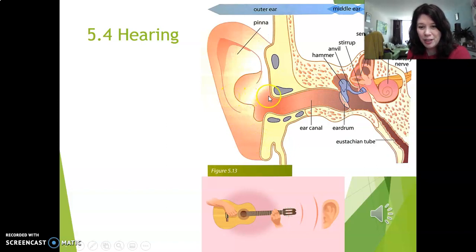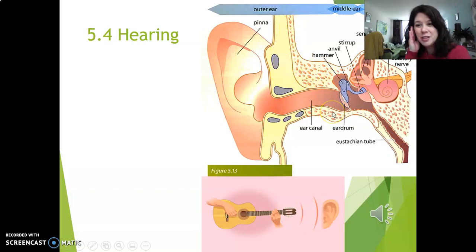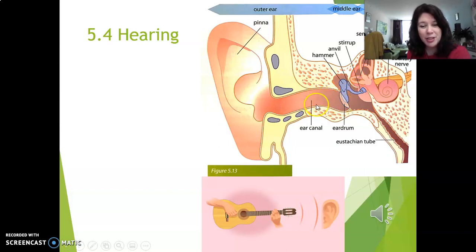Then we have the ear canal that goes into your skull. And the reason we know it goes into your skull is because here you can see the skull bones. So that is just the side of your skull. Here we have the ear canal, and then here we have the eardrum — that is, of course, your trommelvlies. The outer ear goes from the pinna to the eardrum, but not the eardrum itself.